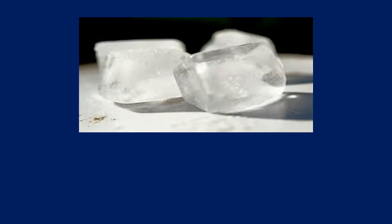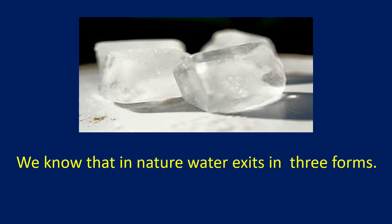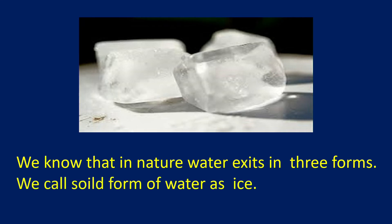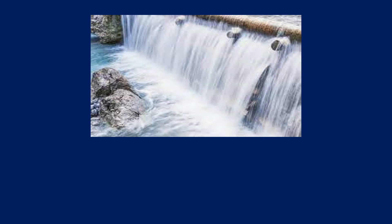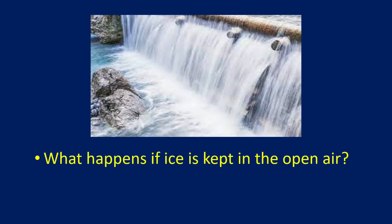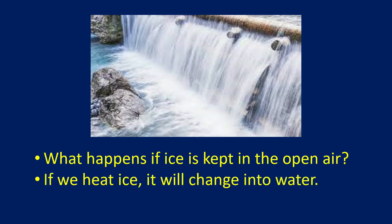What is this? This is a piece of ice. How do you feel if you take it in your palm? You feel very cold. After some time, it melts. In nature, water exists in three forms. One is ice — that is in solid form. This is a waterfall — we are getting water through it. If ice is kept in open air, it will melt and turn into water. If we heat ice, it will change into water.